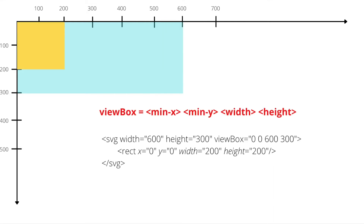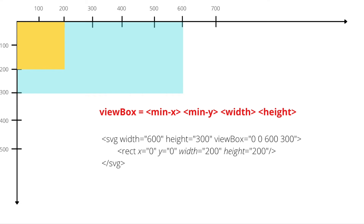Now we're moving on to the concept of viewbox. The viewbox is easier to understand via examples. By definition, the viewbox consists of four numbers: x, y, width, and height. You define the viewbox on the SVG tag, and by default the viewbox dimension is exactly the same as the SVG viewport. Here I keep the viewbox at its default — matching the SVG viewport of 600 pixels wide and 300 pixels tall, with the top left corner x, y at the origin.